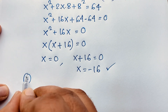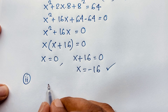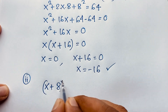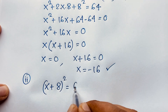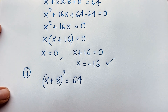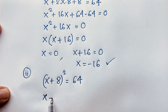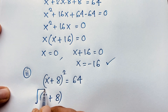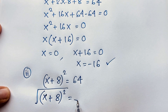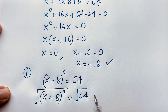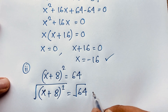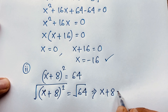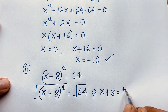Second method: we have (x + 8)² = 64. I apply a square root to both sides. Taking the square root of 64, this expression becomes x + 8 = ±8.